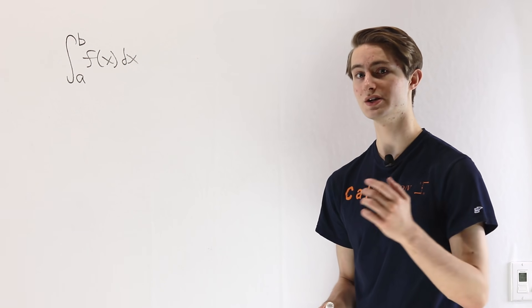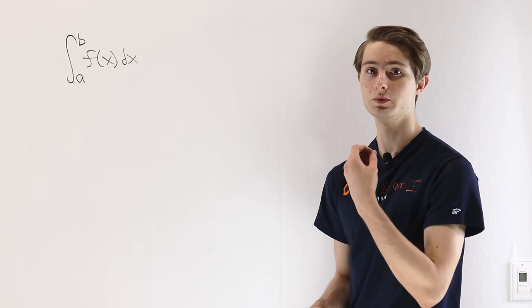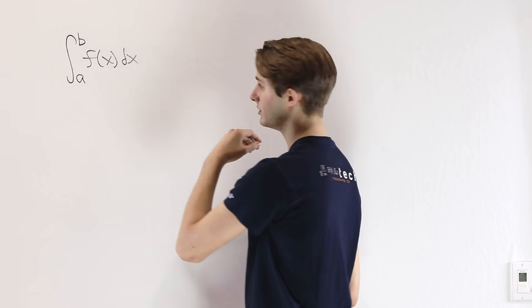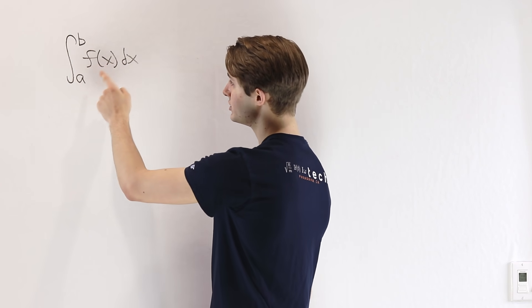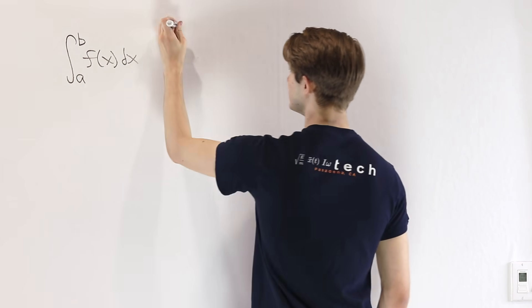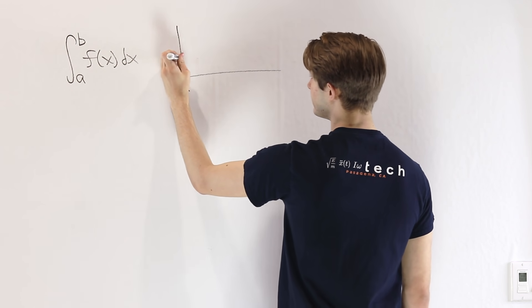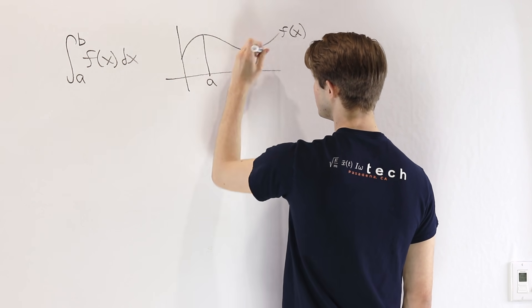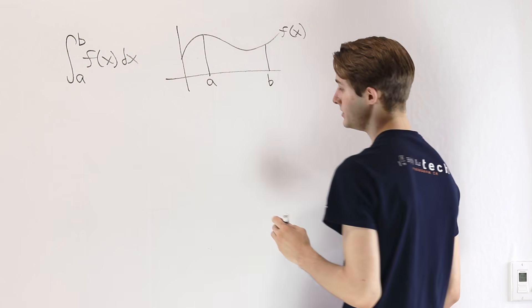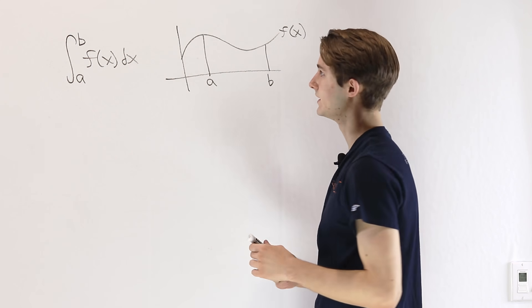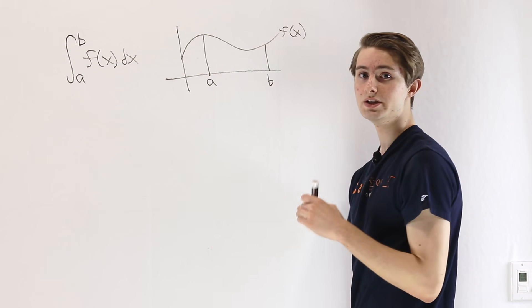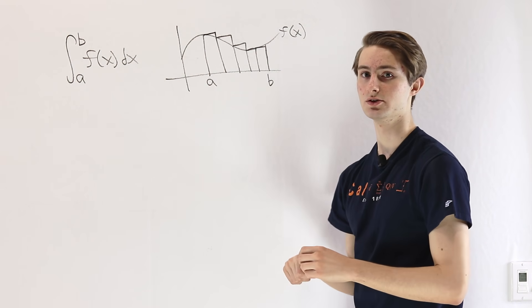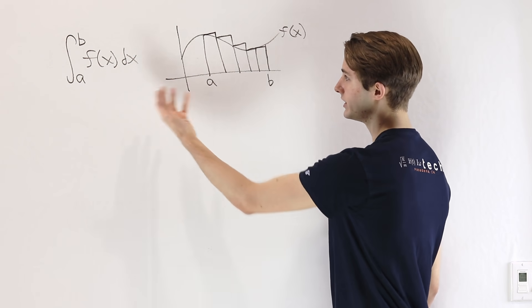We have to think about that more in terms of geometry than the way we often learn it, which is in terms of algebra. So let's say we have the function f of x and we want to integrate it on the range from a to b. We can think about the graph of f of x, define a beginning point a and ending point b, and split this region into a bunch of rectangles, adding up their areas to approximate the area under our curve.